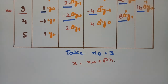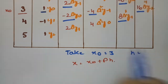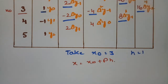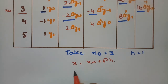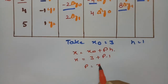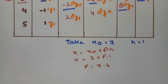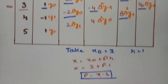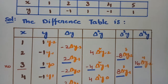So h is the difference — that is 5 minus 4, the value is 1. So if I substitute: x equals 3 plus p times 1. What is our p value? That is p equals x minus 3. Now we have to substitute all these values in the Stirling's formula. We have the Stirling's formula ready here.